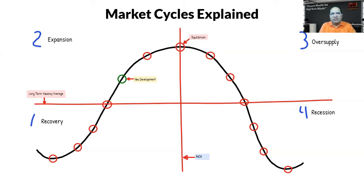In Phase 1, we are in recovery. We just came out of recession and now we are starting to recover. As our NOI—you can see this is the vertical line—our income or NOI grows, we start to get reduced vacancies, or occupancies increase.